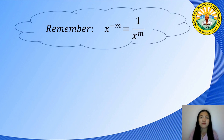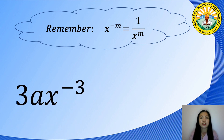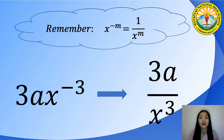But remember, we have discussed that expressions with negative exponents can be written into positive exponents by applying one of the laws of exponents: x raised to negative m is equal to 1 over x raised to m. Therefore, 3ax raised to negative 3 can be written as 3a over x raised to 3, and now we can clearly see that it is a Rational Algebraic Expression.